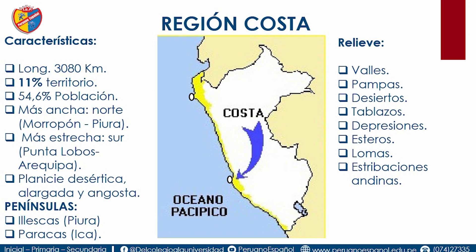El tablazo más poblado en Lima es el tablazo de Lurín, y el más antiguo es el tablazo de Máncora. En un tablazo encontramos hidrocarburos: petróleo y gas. En las depresiones encontramos zonas salineras. La depresión más profunda es la de Bayóbar en Piura. En Lambayeque tenemos la llamada Cañamac, ubicada en el distrito de San José. En Tumbes encontramos los famosos manglares de Tumbes, donde hay mezcla de agua de río y agua de mar. Las lomas son pequeñas elevaciones con presencia de vegetación; una loma muy famosa es la loma de la Chay en Lima.